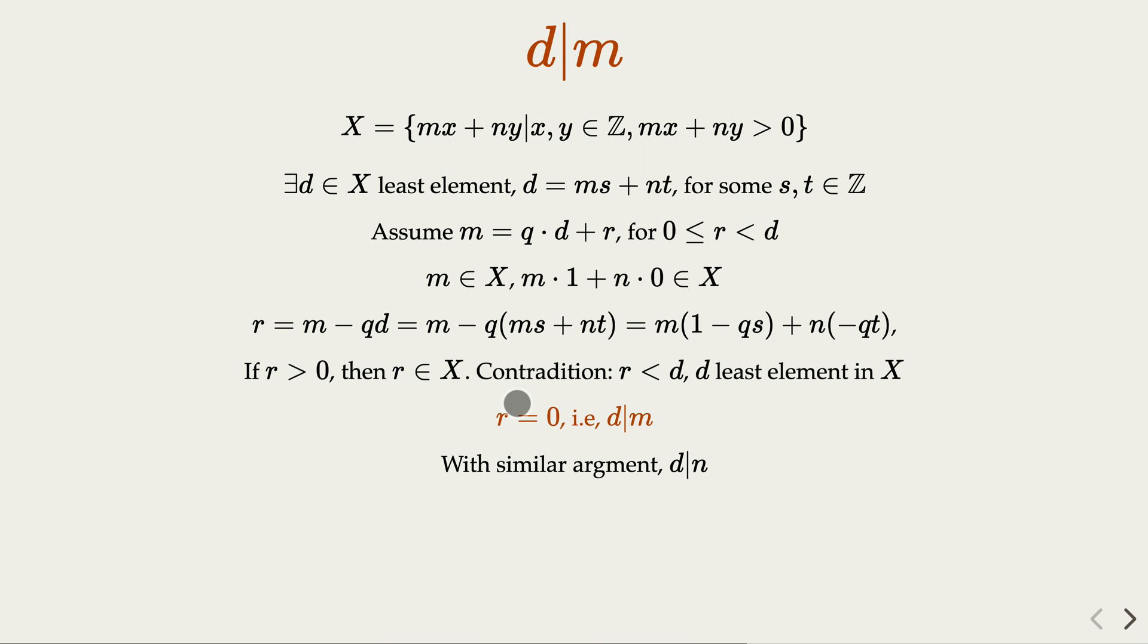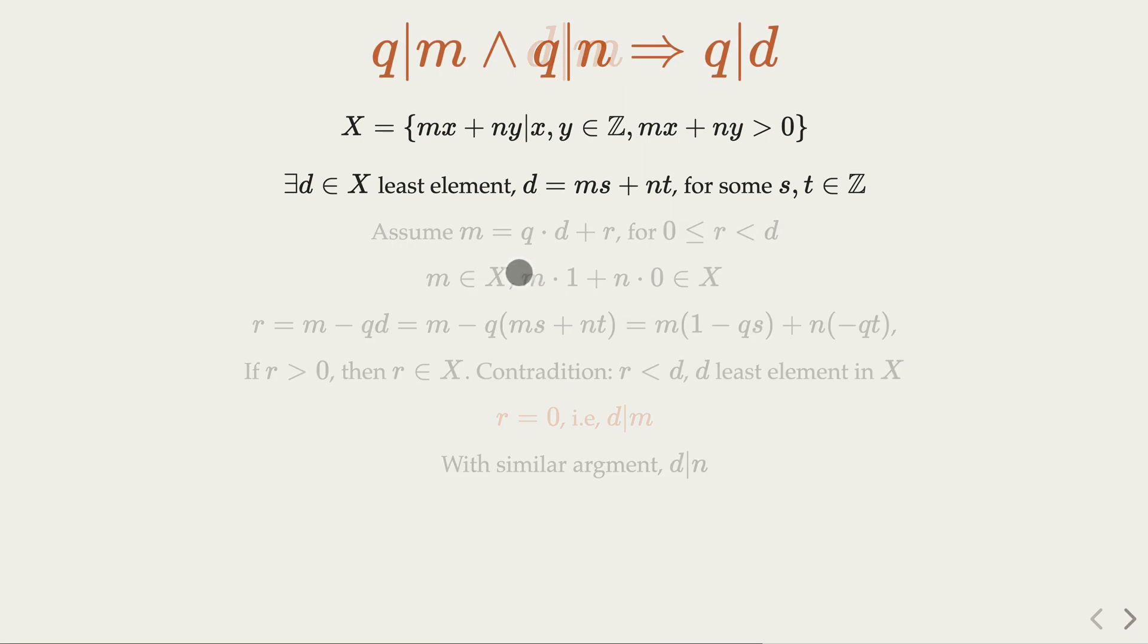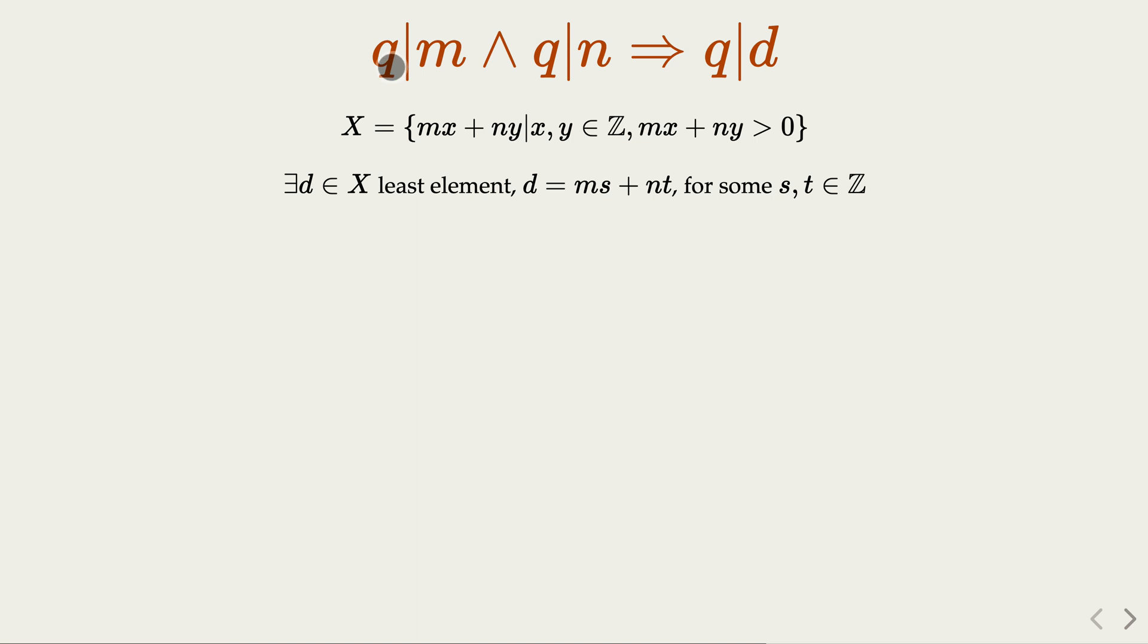In order to prove that d is the greatest common divisor, you have to prove the second fact. In other words, if q is a common divisor, then q must divide d.